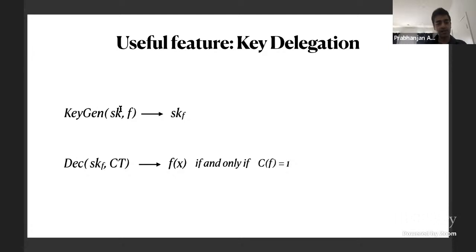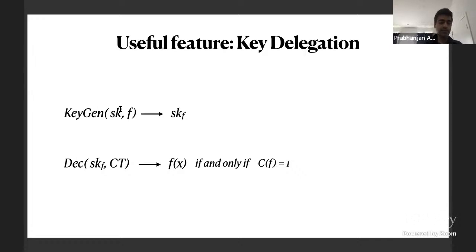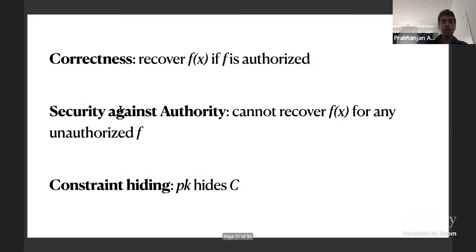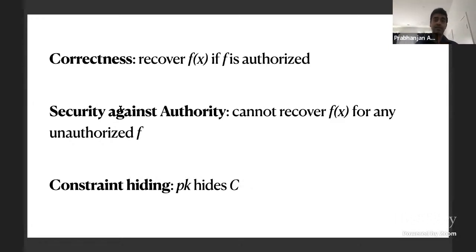A useful feature is key delegation: a key generation algorithm takes a secret key and a function f, outputting a functional key for f — similar to attribute-based encryption. The decryption algorithm then takes the functional key and ciphertext and outputs f(x) for authorized f. The scheme must satisfy correctness, security against the authority, and constraint hiding — the public key should not reveal any information about the constraint circuit c.